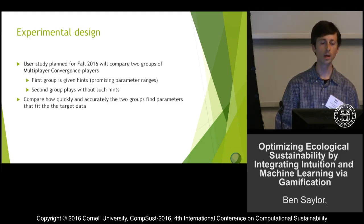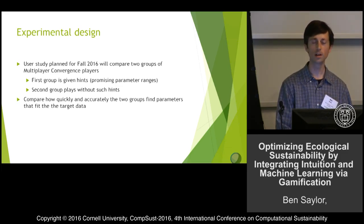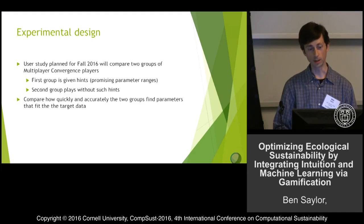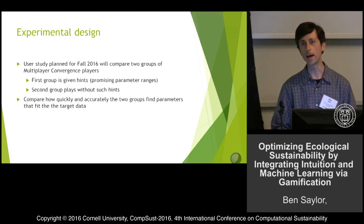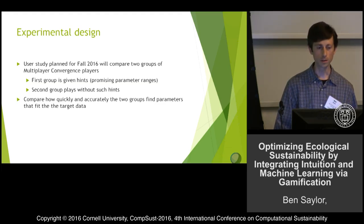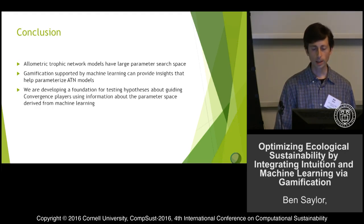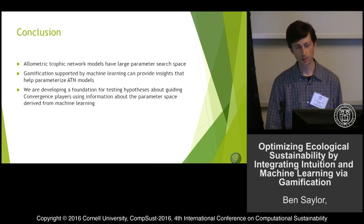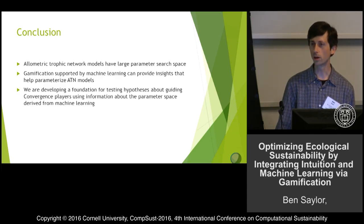What we will do with these food webs and parameter ranges is conduct a user study planned for the fall. We'll compare two groups of players: the first group will be given these hints — these parameter ranges — while the second group will not be given the hints. We'll compare how quickly and accurately the two groups are able to find a match to the target ecosystem data.